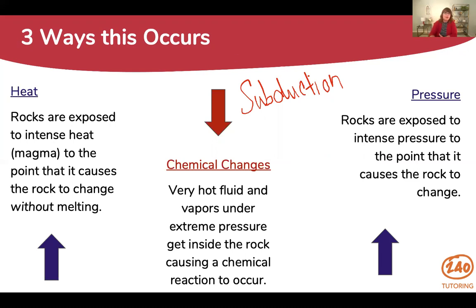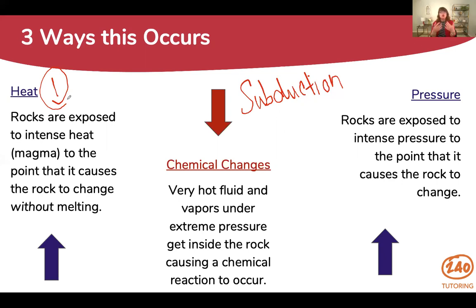Our first way that a metamorphic rock can form is through exposure to intense heat, and this usually comes from magma. Magma is what's deep under the earth's surface, and it's very hot. It heats that rock to the point that it changes what type of rock it is. Now, it doesn't melt it completely into the magma, but it does change that rock.